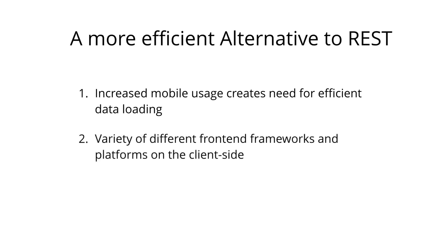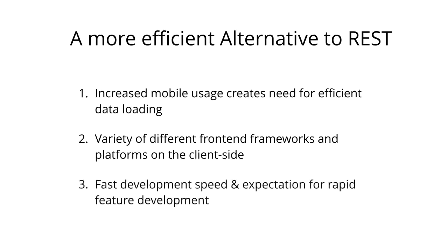The heterogeneous landscape of front-end frameworks and platforms that run client applications make it difficult to build and maintain one API that would fit the requirements of all the different clients. With GraphQL, each client can access precisely the data it needs. Continuous deployment has become a standard for many companies — rapid iterations and frequent product updates are indispensable. With REST APIs, the way data is exposed by the server often needs to be modified to account for specific requirements and design changes on the client side, which hinders fast development practices and product iterations.